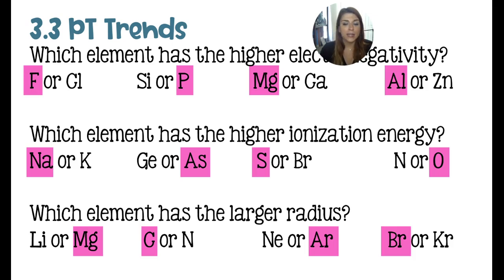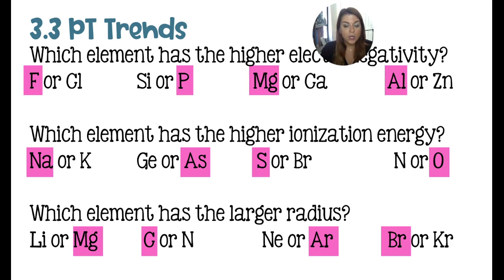For which element has the larger radius, francium is the winner of that lucky corner. The one with the largest radius is going to be closest to francium — meaning it is on the bottom or most to the left of the pair.